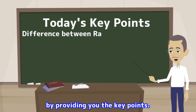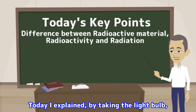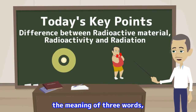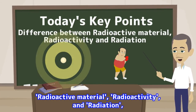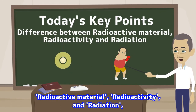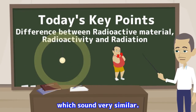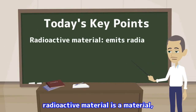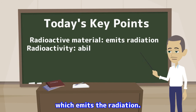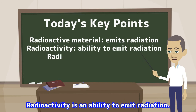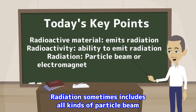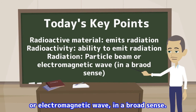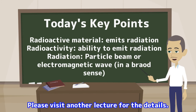Let me wrap up my lecture by providing you the key points. Today I explained, by taking the light bulb and boxing as examples, the meaning of three words — radioactive material, radioactivity, and radiation — which sound very similar. To put it simply: radioactive material is a material which emits the radiation; radioactivity is an ability to emit radiation; radiation sometimes includes all kinds of particles and electromagnetic waves in a broad sense. Please visit another lecture for the details.